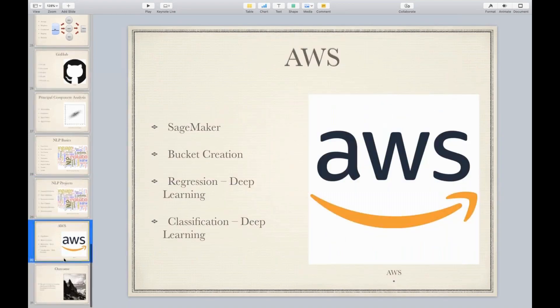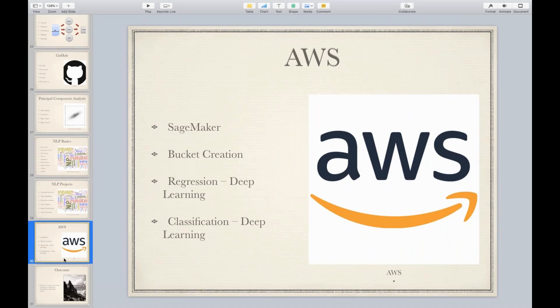And then finally, we're going to close up and explain you deployment in Heroku and AWS. We're going to explain you SageMaker and how to create a bucket in AWS and how to execute a project, how to write a code and how to deploy it.